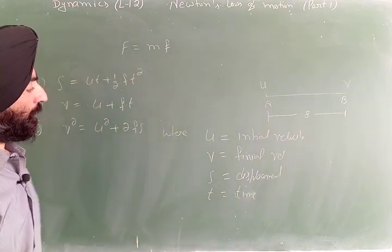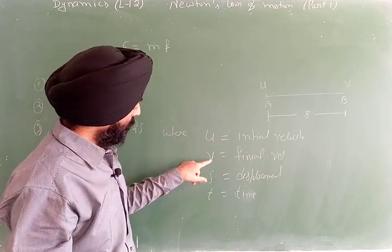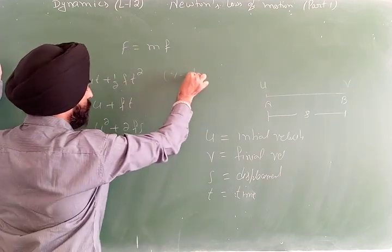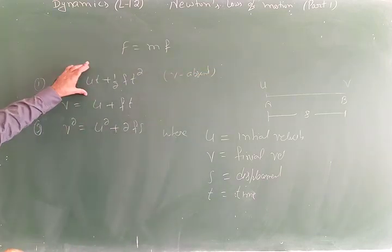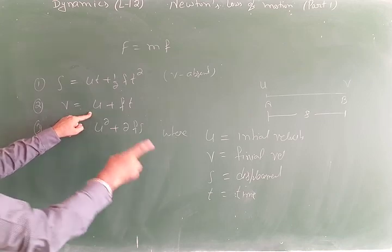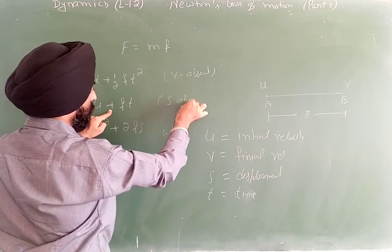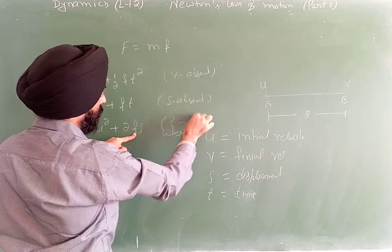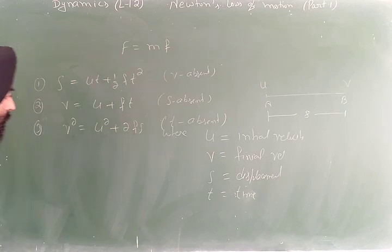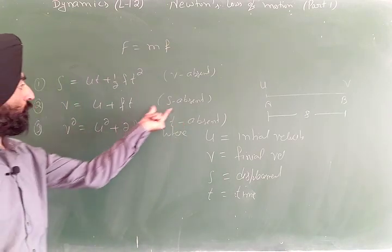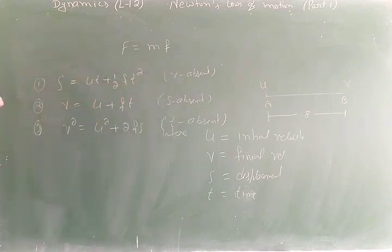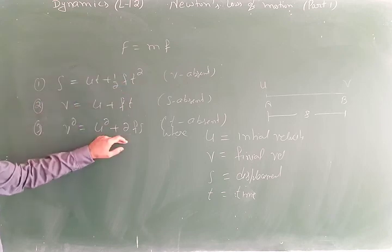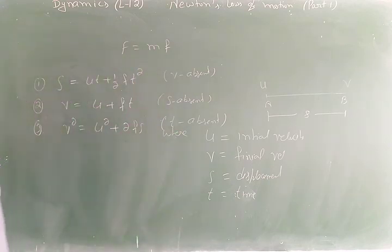To choose the right equation, identify which variable is absent. If v is absent, choose s = ut + ½ft². If s is absent, choose v = u + ft. Select the formula based on whichever quantity is not given.